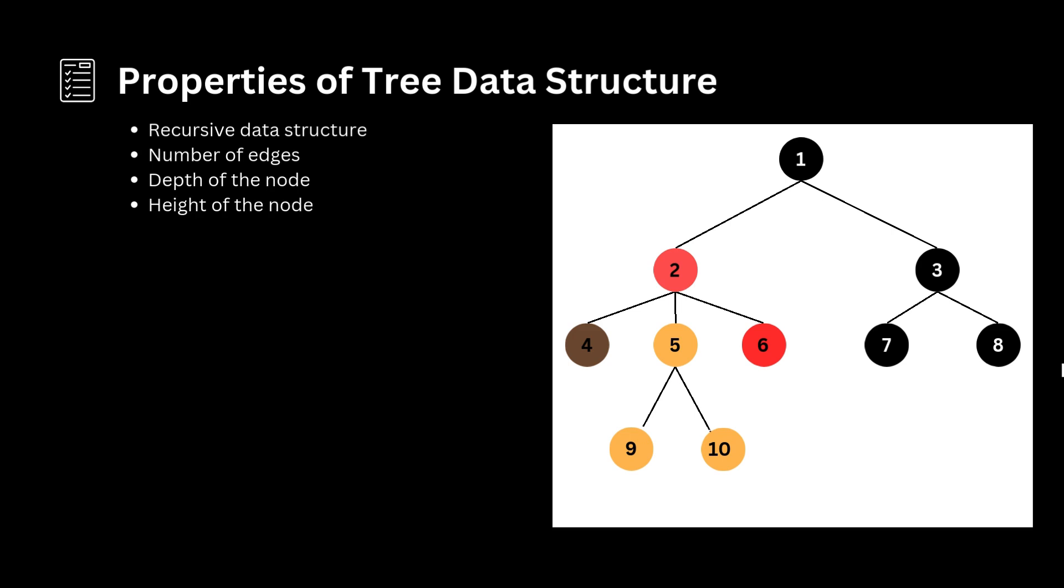The height of node x is defined as the length of the longest path from node x to a leaf node. These were the properties of the tree data structure.